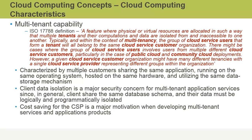The next cloud computing characteristic is multi-tenancy. This allows multiple customers to share the same applications or the same physical infrastructure. However, there is isolation kept between those customers. For example, multiple customers might use the same email service in the cloud, but each tenant or cloud customer might have a different instance of that application where they have their own customized settings, their own mailboxes, and so on. Client data isolation is a major security concern for multi-tenant application services. Customers can provision their own virtual networks in the cloud, enable encryption at the network or storage level, and so on.